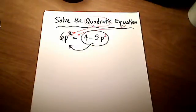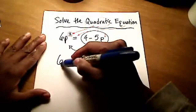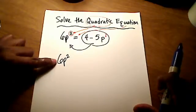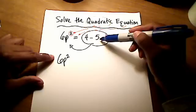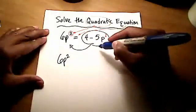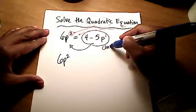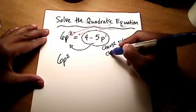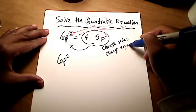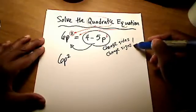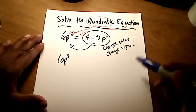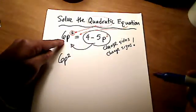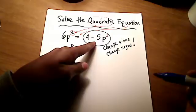It probably makes more sense to move one term, less work, than it is to move two terms. But in this case, since our quadratic, which is 6p², is a positive number, that coefficient is a positive 6, we actually want to keep it positive. So we should actually move these two on the right-hand side over to the left-hand side. It's going to be easy to do that.